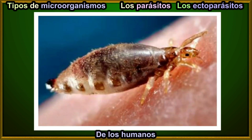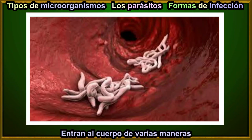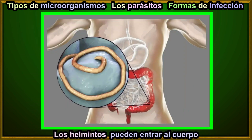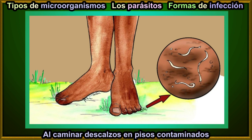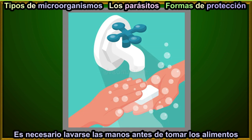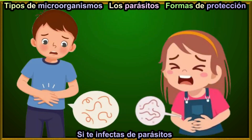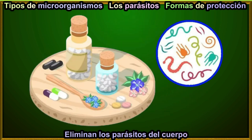Ectoparasites feed on the blood of humans and animals. Parasites can enter our bodies in many ways. Protozoa can be in dirty water and if we drink it by mistake, we will get sick. Helminths can enter our bodies through the consumption of contaminated food or by walking barefoot in areas where there is soil. To avoid parasites, it is important to wash your hands well before eating, drink clean and safe water, and avoid walking barefoot in dirty places. If a person gets infected, there are medications called antiparasitics that can eliminate the parasite from the body.